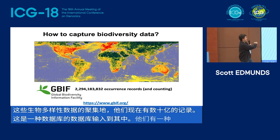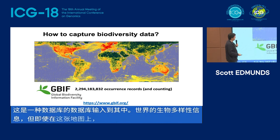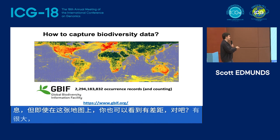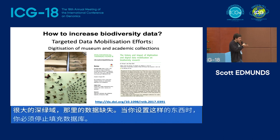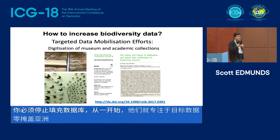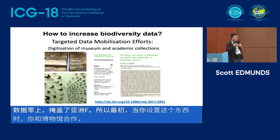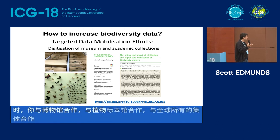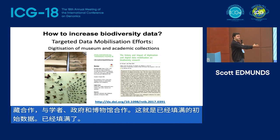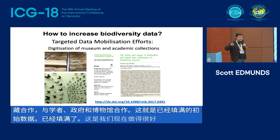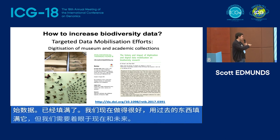But even in this map you can see there are gaps — big dark green areas where data is missing. When you set up something like this, you have to start filling the database. From the very beginning they have focused on targeted data mobilization efforts — initially working with museums, herbariums, global collections, academics, governments. This was the kind of initial data that filled it up. But this is historical. We've done a good job filling it with stuff from the past, but we need to look at the present and the future — how do you get real-time new data?